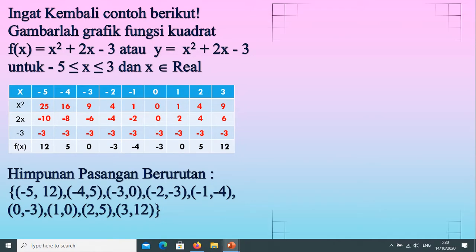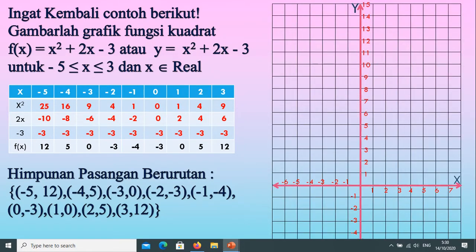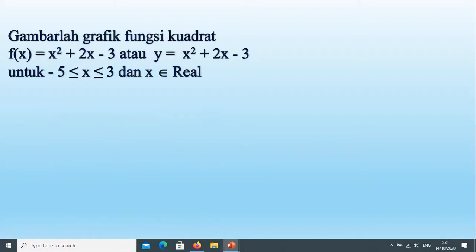Pakai kita bikin tabelnya ya kita ingat kembali seperti itu, kemudian kita buat himpunan pasangan berurutnya, kemudian kita gambarkan titik-titiknya pada koordinat cartesius. Nah ini nanti kita untuk melihat dan membandingkan ya, kalau ini kita semua titik yang bulatnya ini kita cari dan kita gambar semuanya. Kemudian kita hubungkan, nah seperti itu bentuk parabolanya. Parabolanya terbuka ke atas karena nilai a-nya adalah positif.